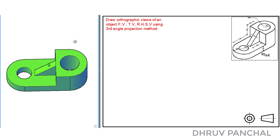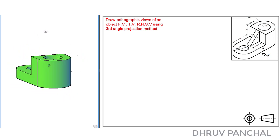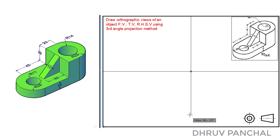Now, let us observe the different views of the given 3D object with respect to the direction of view. To solve this problem, with the help of a roller scale, draw a horizontal line and a vertical line. Name the endpoints of the horizontal line as point XX and the endpoints of the vertical line as point YY, and name the intersecting point as point O, as shown.